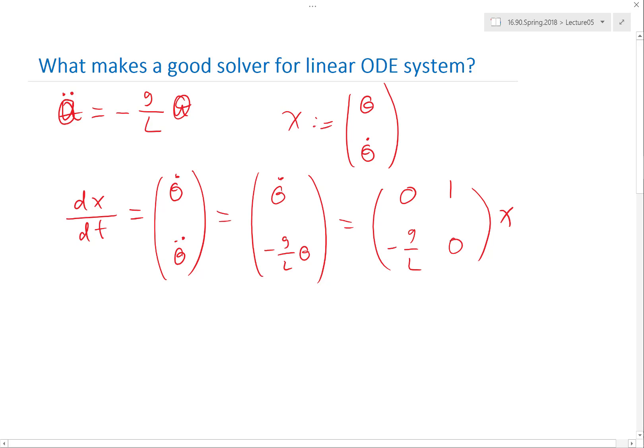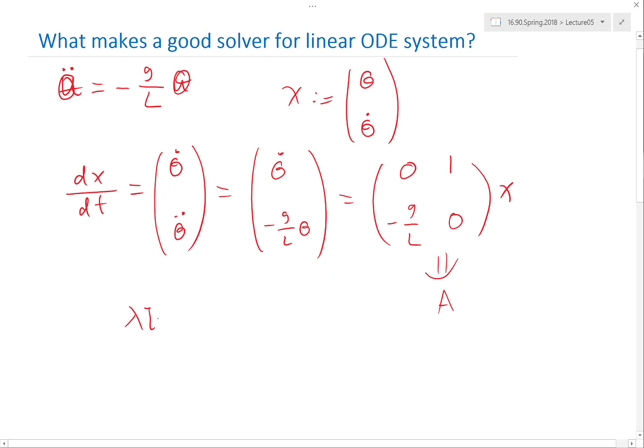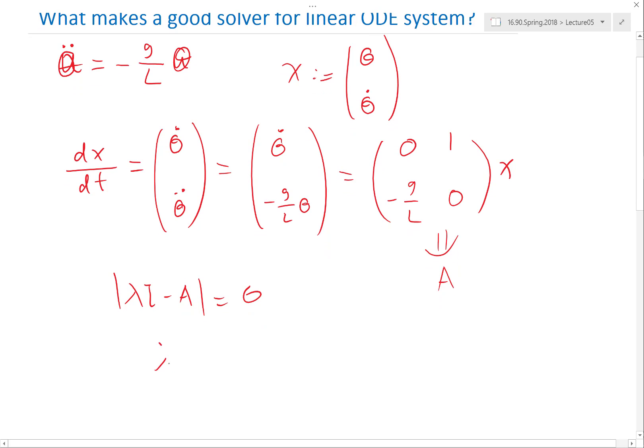So if I take this matrix as A and perform eigenvalue analysis of A, what do I get? Eigenvalue analysis is basically lambda I minus A, determinant equal to zero. So lambda I, put lambda over here, what I get is lambda squared plus g over L equals zero. So lambda equals plus minus square root of g over L times i.